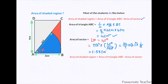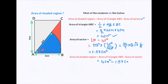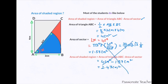The total area of the shaded region then becomes: area of the triangle, 4 cm², minus area of the sector, 1.57 cm², which comes down to 2.43 cm². But this is absolutely wrong. The area of the triangle is correct, but the area of the sector is wrong.